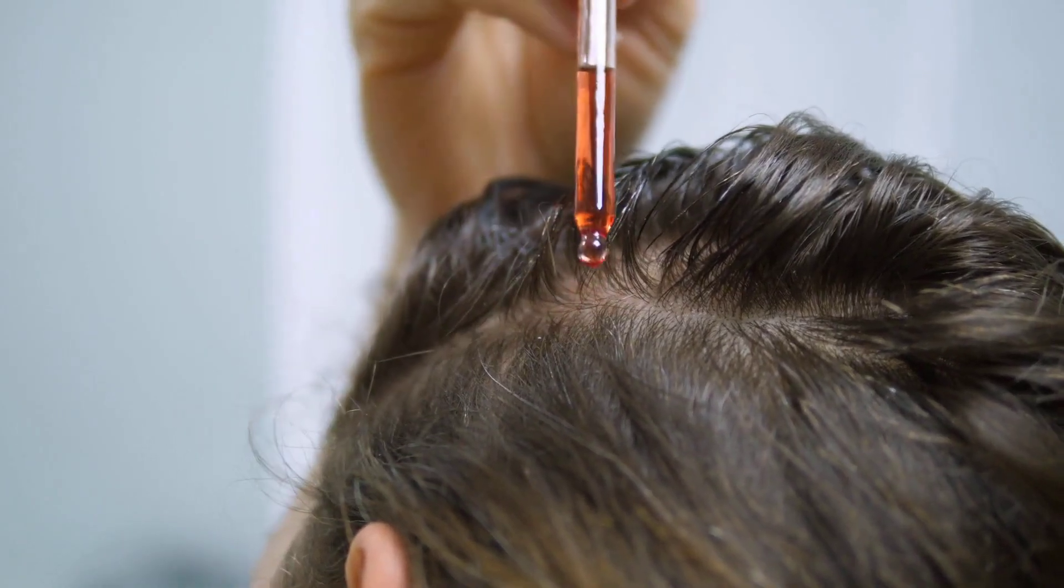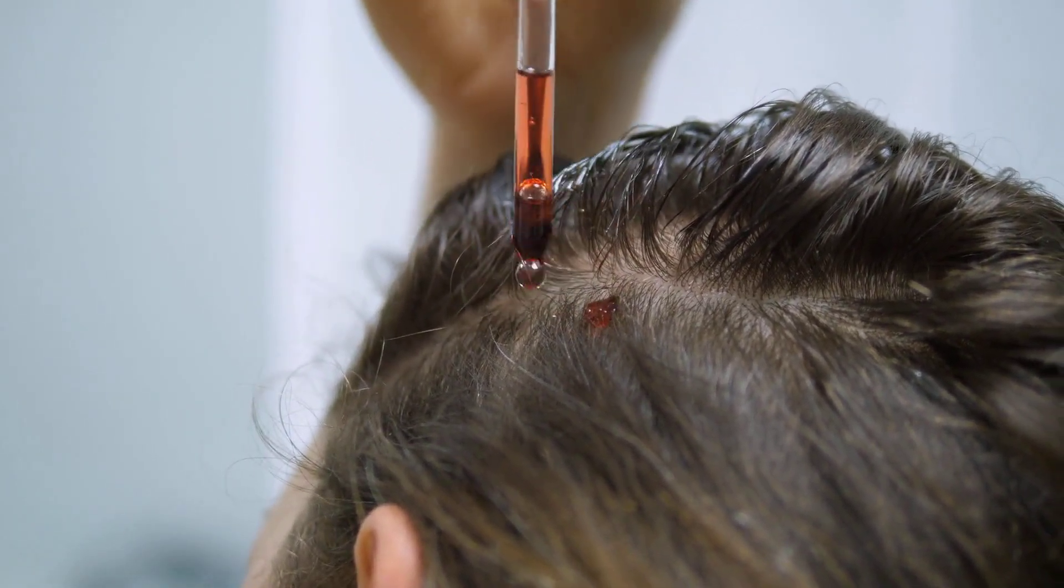By blocking a signal from these trichophages, scientists could restart the hair growth cycle. This was achieved using small molecule inhibitors targeting a receptor on these cells.